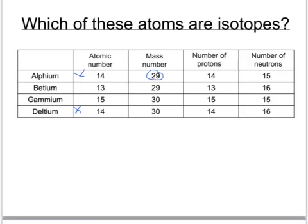But look, they've got different mass numbers. And that's because they've got different numbers of neutrons. So these two, alphium and deltium, are actually different forms of the same element. They are isotopes of each other.